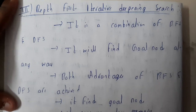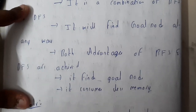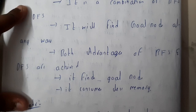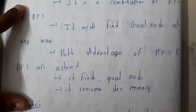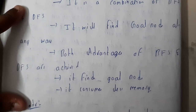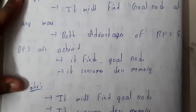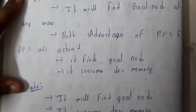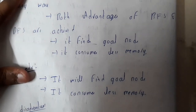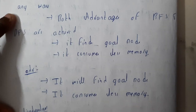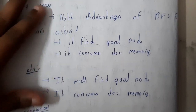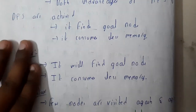So it is a combination of DFS and BFS. It will find a goal node for sure if it exists. Both the advantages of BFS and DFS — finding the goal node and consuming less memory — are found in this Depth First Iterative Search.